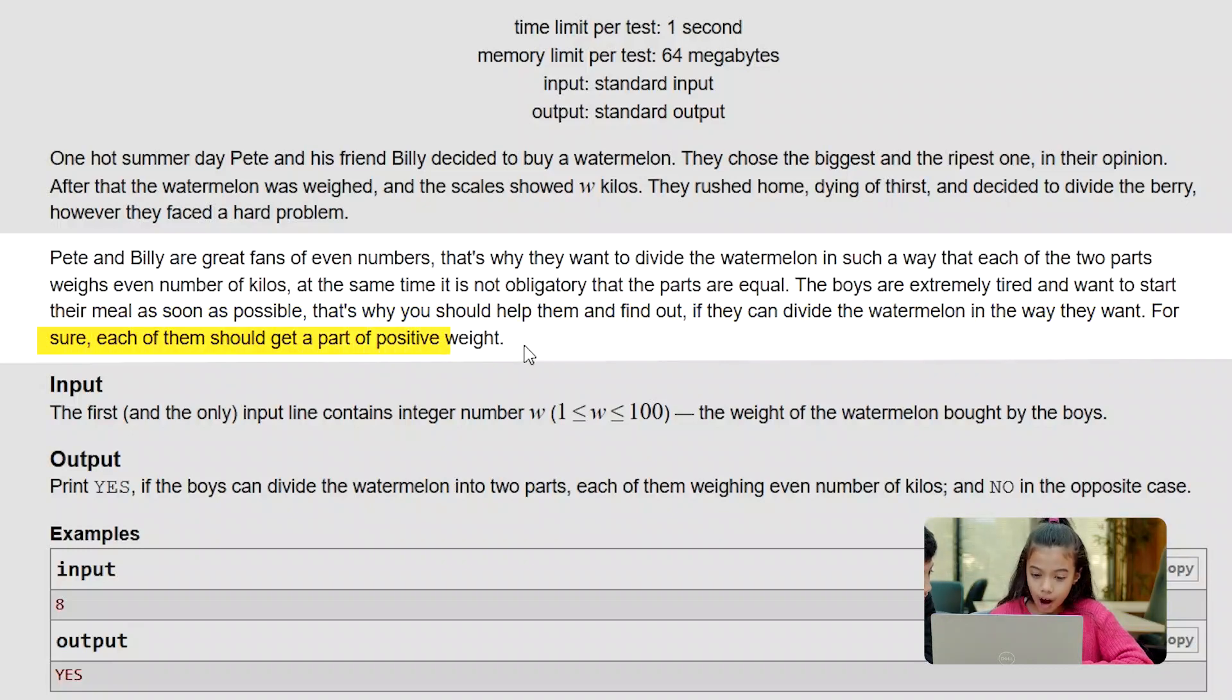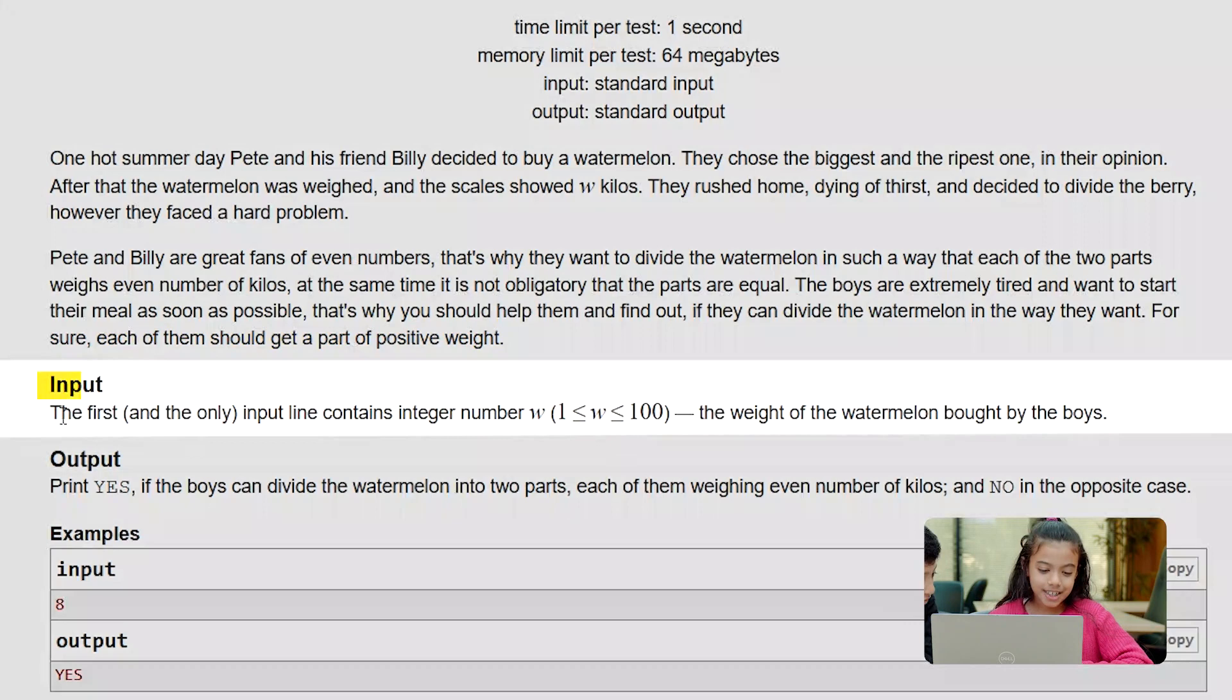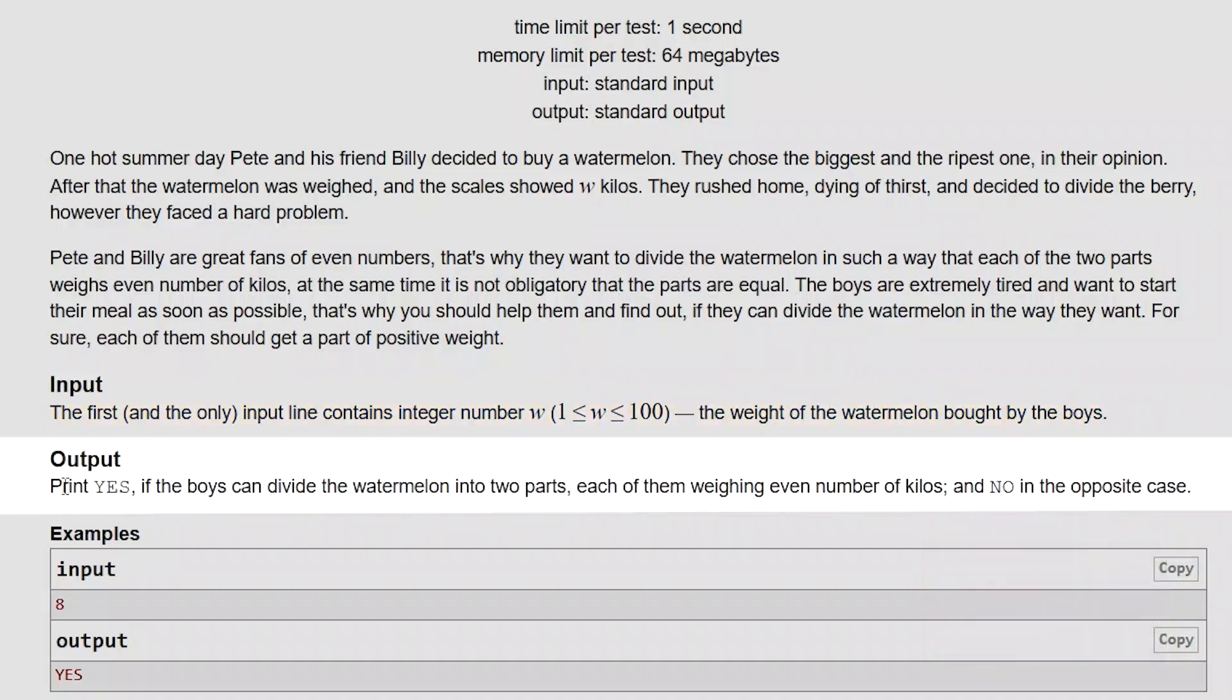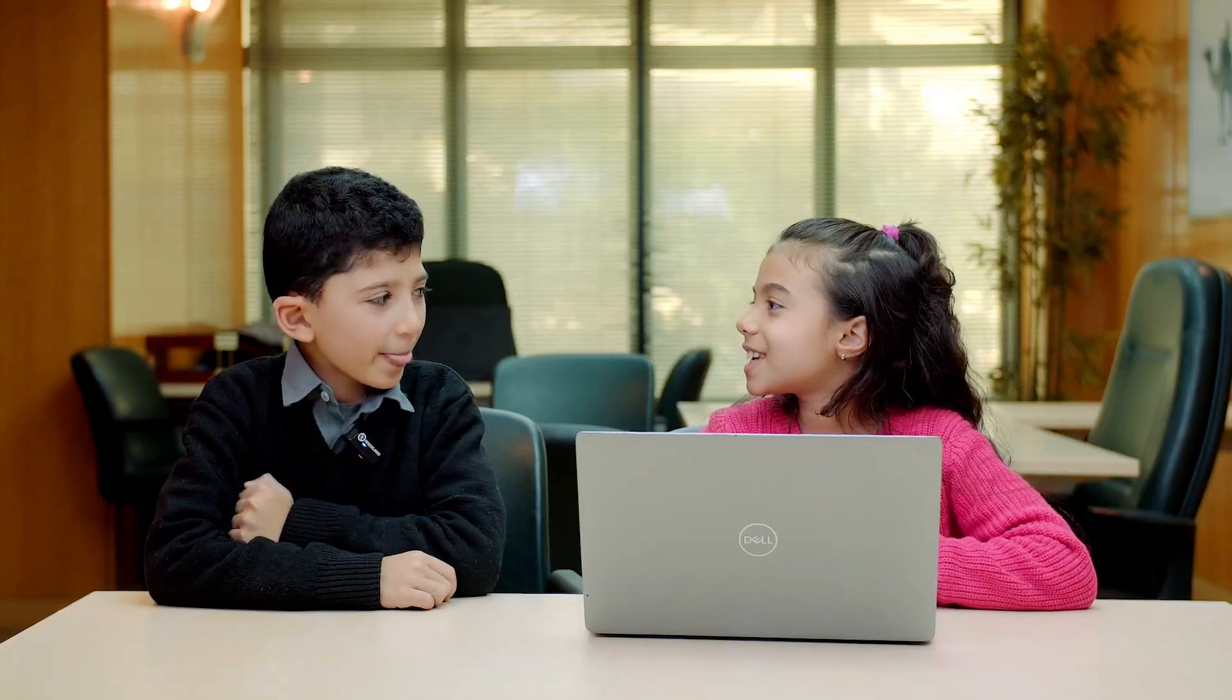a part of positive weight. Input: the first and only input line contains integer number W, which means the weight of the watermelon bought by the boys. Output: print YES if the boys can divide the watermelon into two parts, each of them weighing even numbers of kilos, and NO in the opposite case.